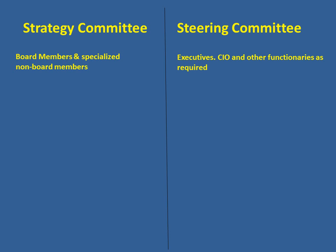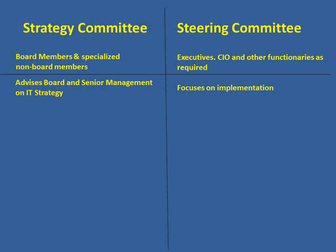The IT strategy committee basically consists of board members and specialized non-board members. On the other hand, the steering committee includes executives from the organization, the CIO, and other key functionaries as required. The strategy committee advises the board and senior management on IT strategy, while the steering committee focuses on the implementation part of IT.